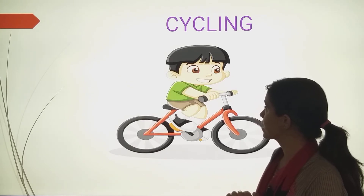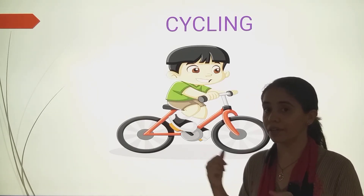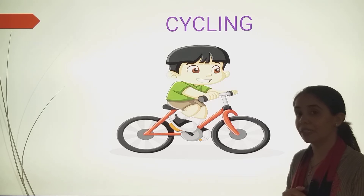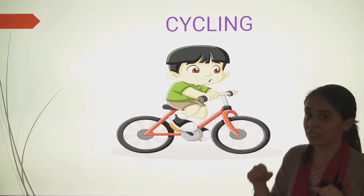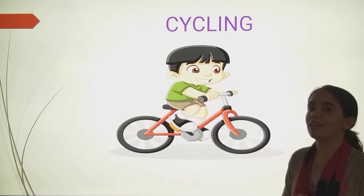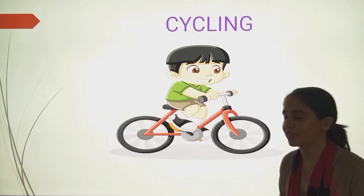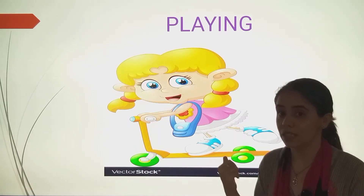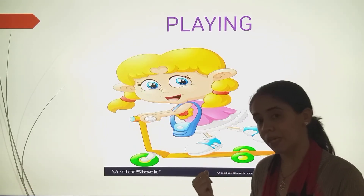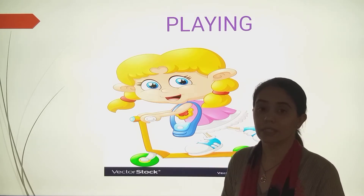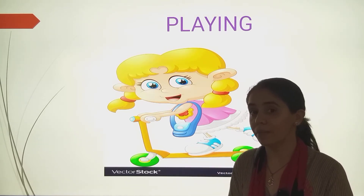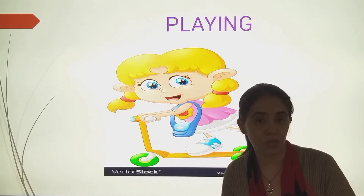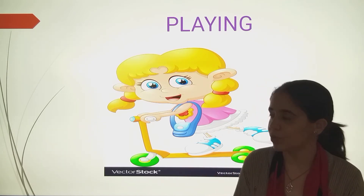Then cycling. What is this girl doing? Tell us. Cycling. The girl is riding a cycle. So what is this? Action word. Very good. Then playing. This girl is playing with a scooter. So what is this? Action word.